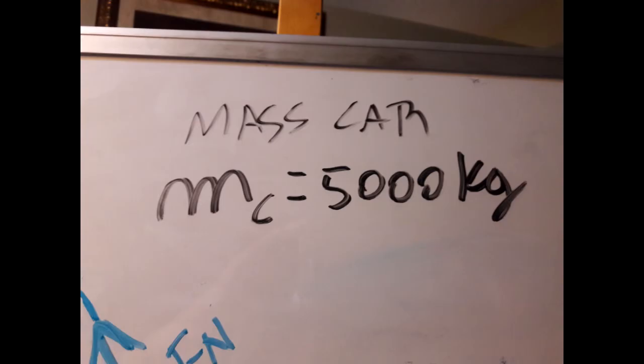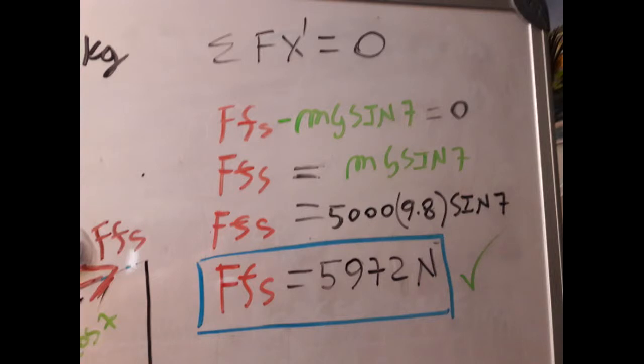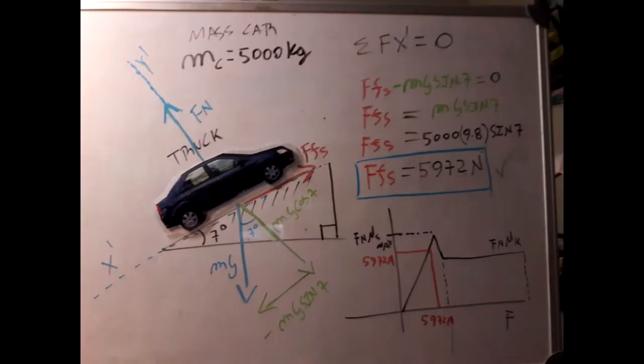We have that the mass of the car is 5000 kg. I am going to set the sum of the forces equal to zero. And I get that the friction force has to be 5000 kg multiplied by g, that is 9.8, times sine of 7. This is because both forces have to add to zero, so they have to be equal to each other.